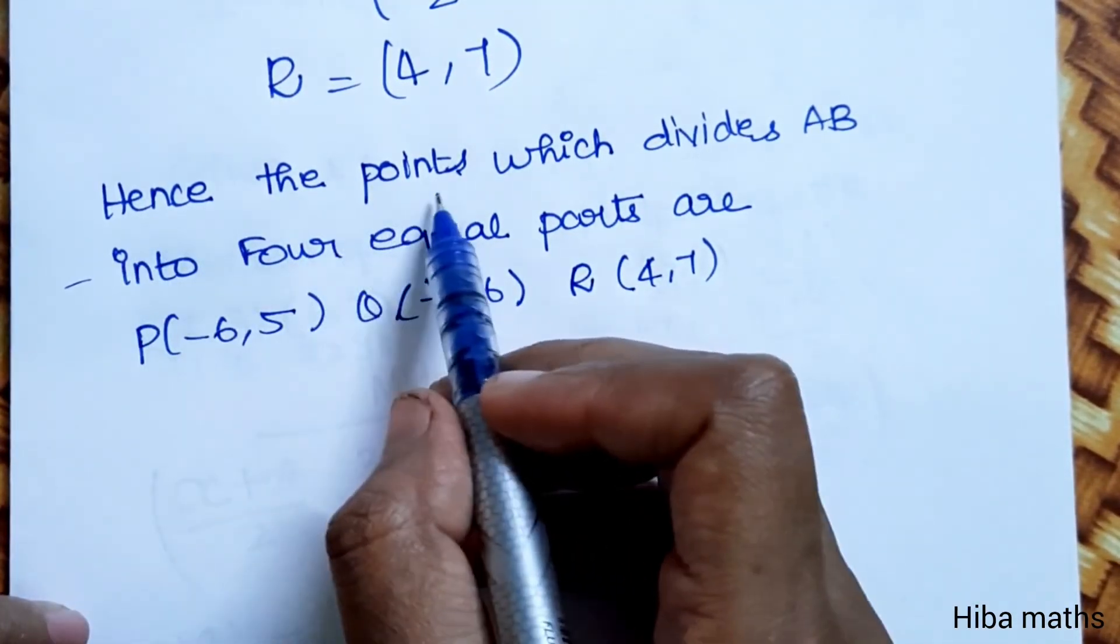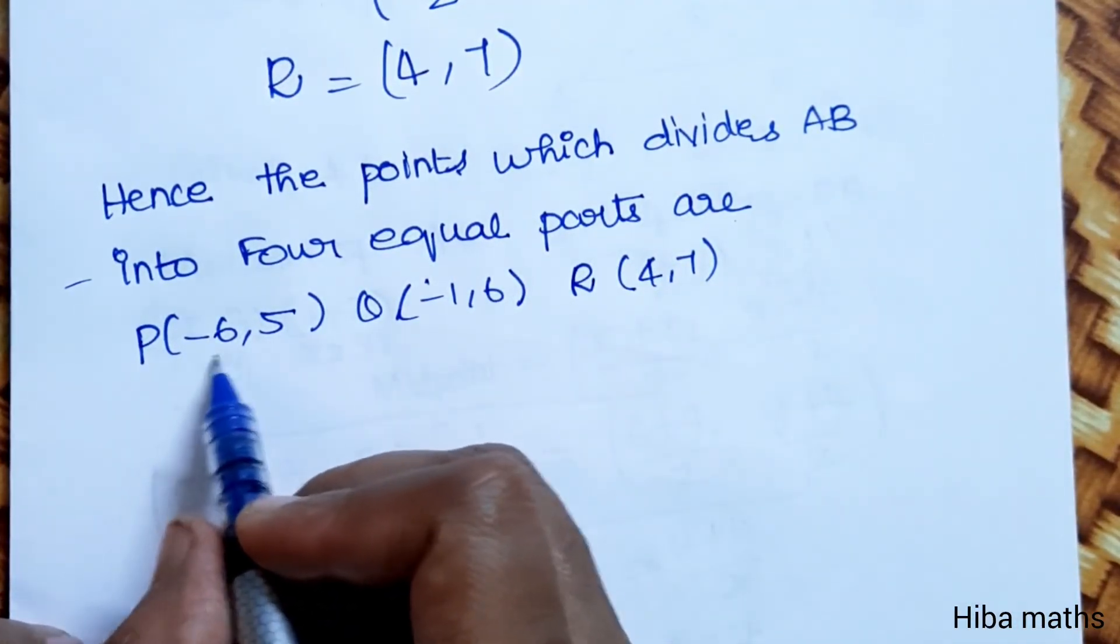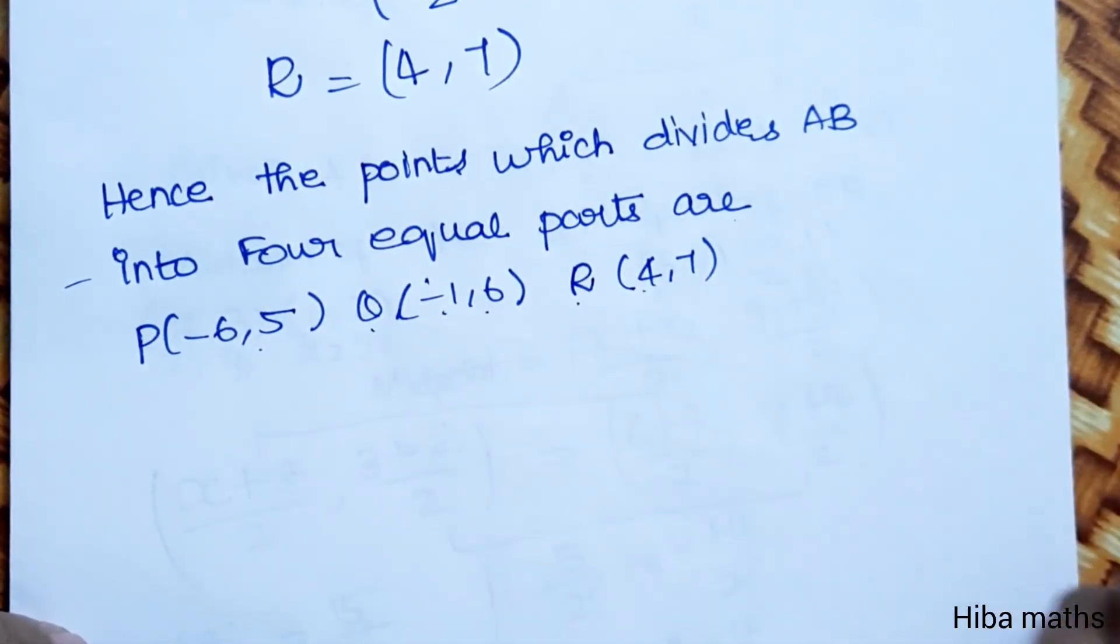Hence, the points which divide AB into 4 equal parts are P(-6, 5), Q(-1, 6), and R(4, 7). Thank you so much for watching.